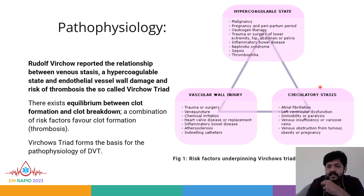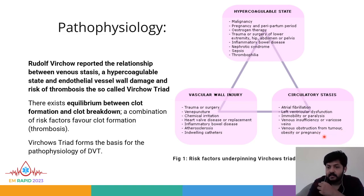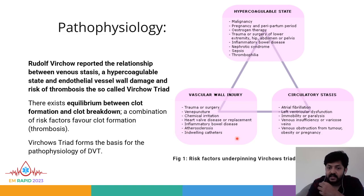For circulatory stasis, risk factors include: atrial fibrillation, left ventricular dysfunction on echocardiogram, immobility or paralysis, venous insufficiency or varicose veins, venous obstruction from tumor, obesity, or pregnancy. Vascular wall injury can result from recent trauma or surgery, venous puncture, chemical irritation, heart valve disease or replacement, inflammatory bowel disease, atherosclerosis, or indwelling catheters — which are very important to note.